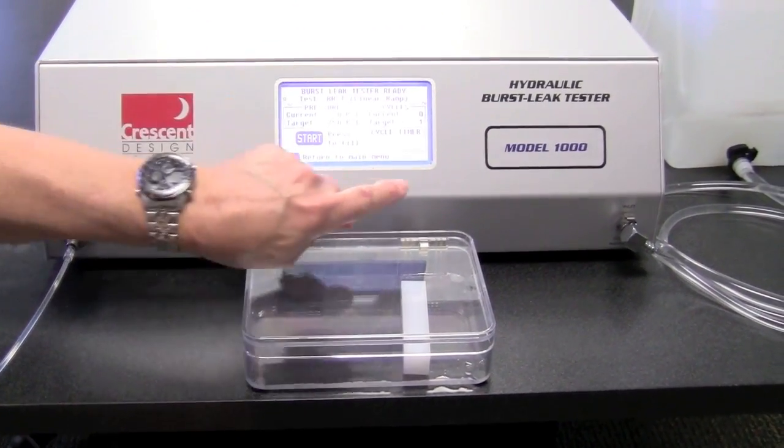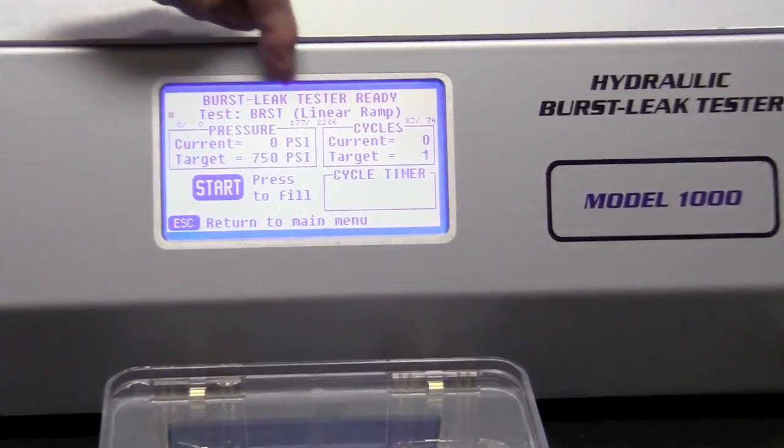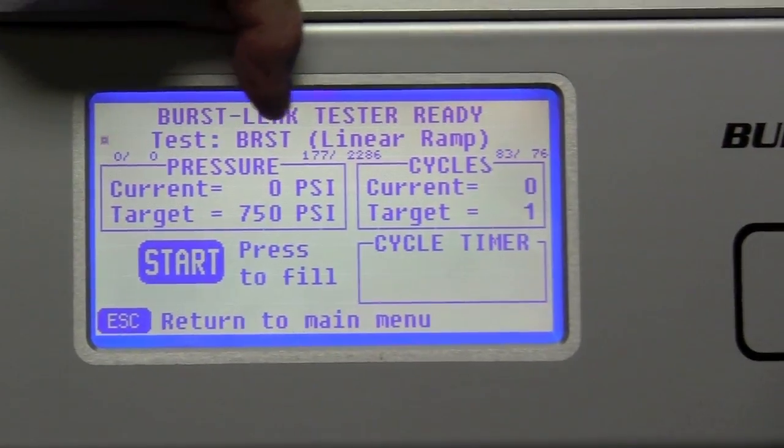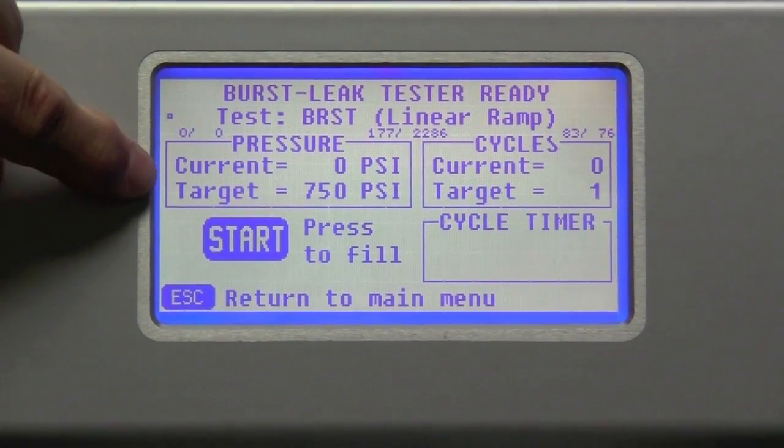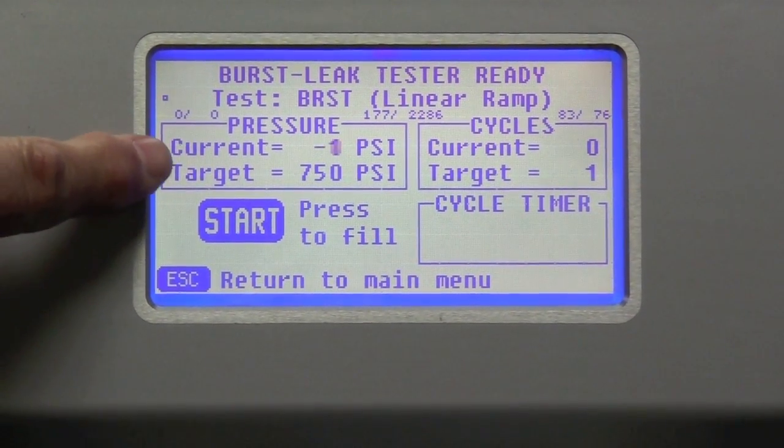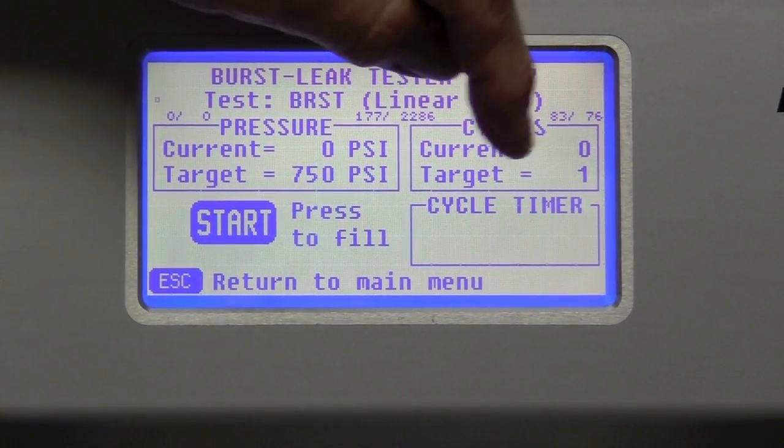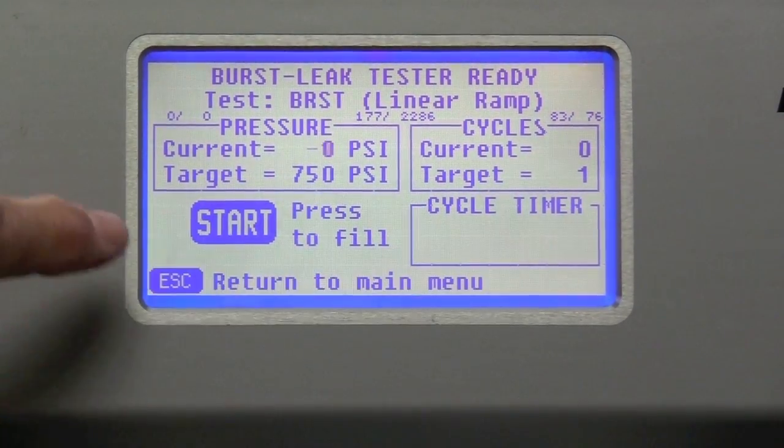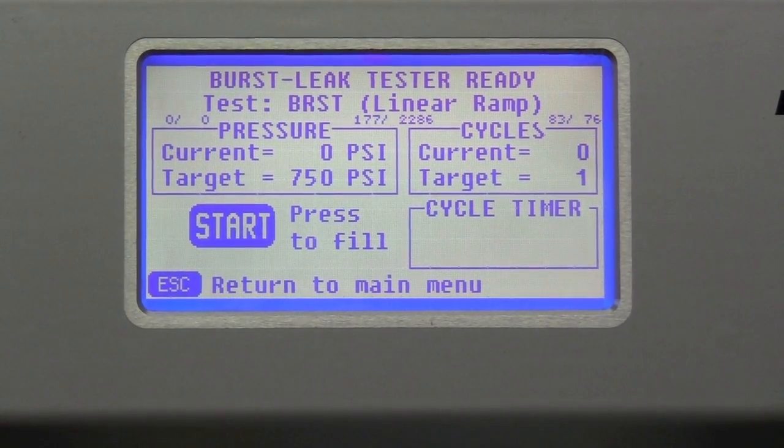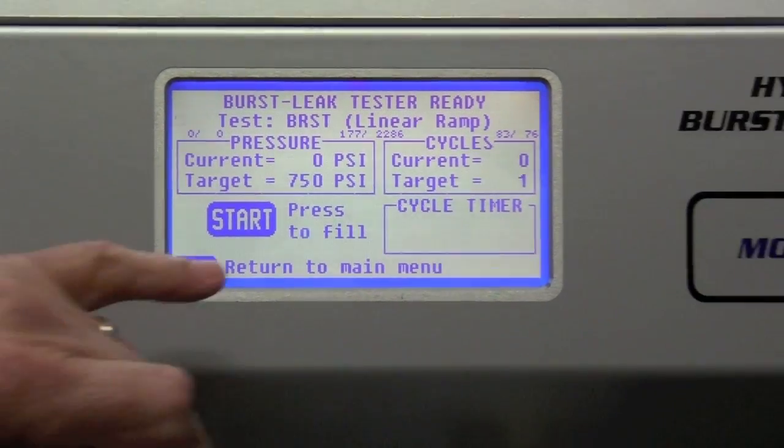So just a quick tour of the screen. You'll notice the tester is ready. It gives you the name of the test, the pressure. You currently see it's zero. And the target is 750 cycles. The target is one. And there's a cycle timer and press start to fill. And so that's what I'm going to do. I'm going to press start.